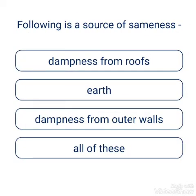Question: Which of the following is a source of dampness? Options: dampness from roofs, dampness from earth, dampness from outer walls, all of this. The answer is all of this.